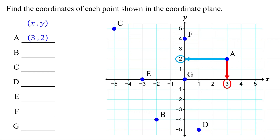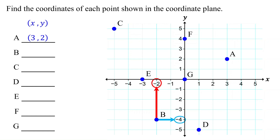Remember, when you write the coordinates, the first number should be the x-coordinate, and the second number should be the y-coordinate. To find the coordinates of point B, first move vertically to the x-axis to find its x-coordinate, which is negative 2. Then, move horizontally to the y-axis to find its y-coordinate, which is negative 4. Therefore, the coordinates of point B are (-2, -4).